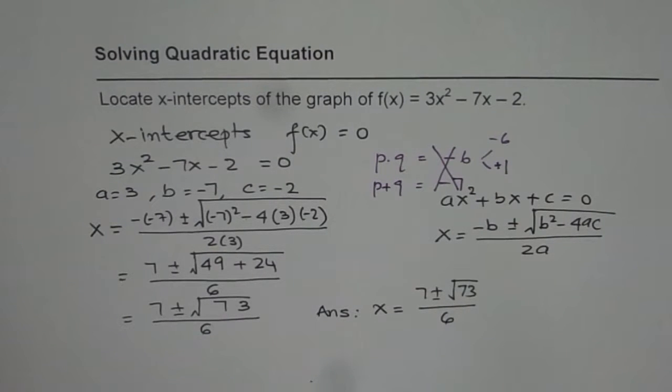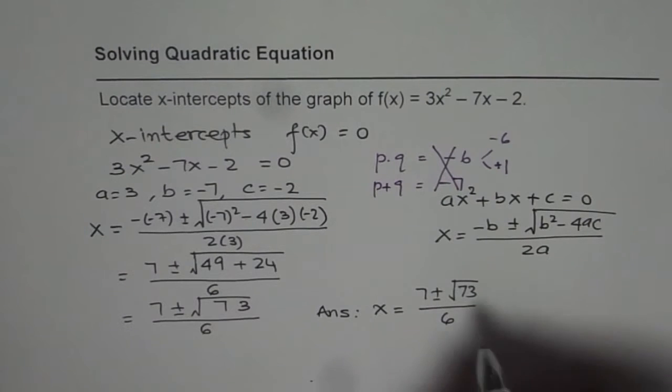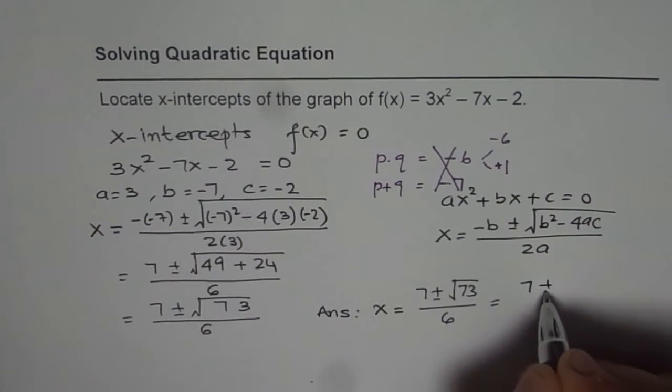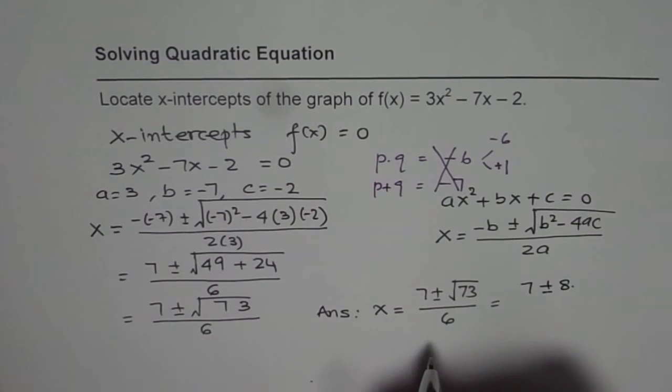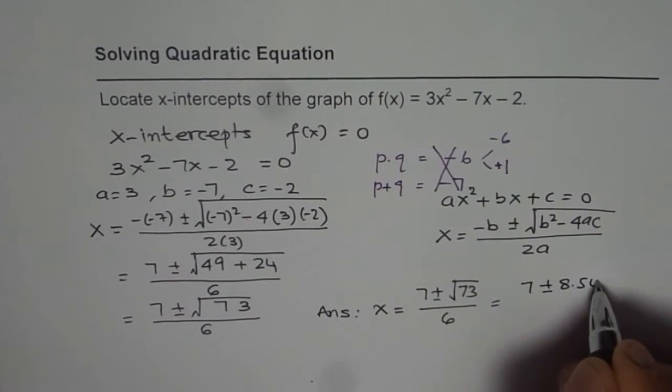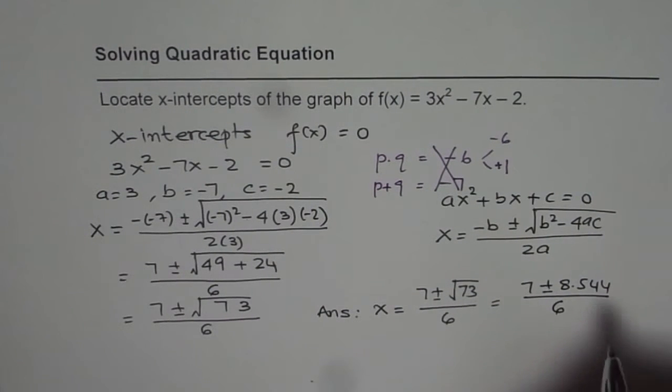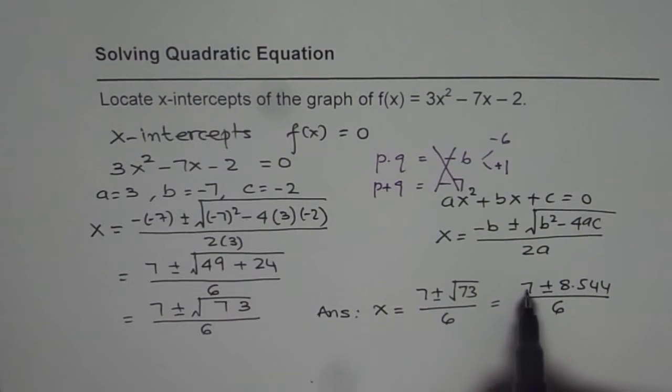If you need to find the answer to, let's say, two decimal places, in that case you have to figure out what is square root of 73. Square root of 73 equals 8.544. So in that case, you have to do (7 ± 8.544) / 6. That results into two solutions: the first solution is 7 plus 8.544, the other one is 7 minus 8.544.